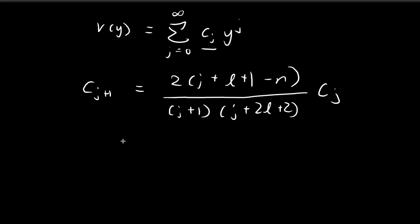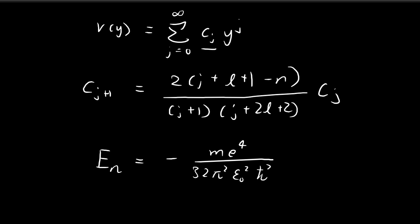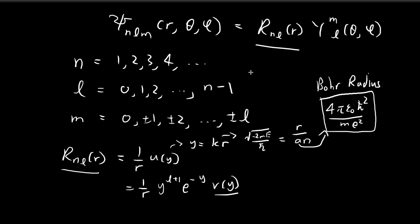For every choice of n, we also have a corresponding allowed energy level, as derived in the last video. This is a very special result because it is the exact same formula that Niels Bohr was able to obtain in his own model of the hydrogen atom. Now let's apply these formulas to a specific example.